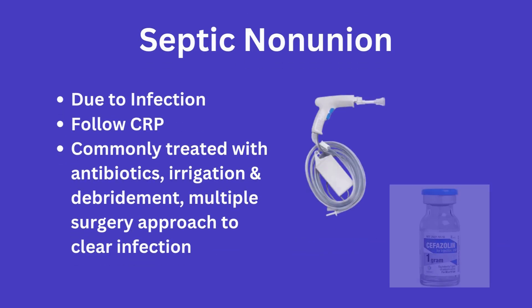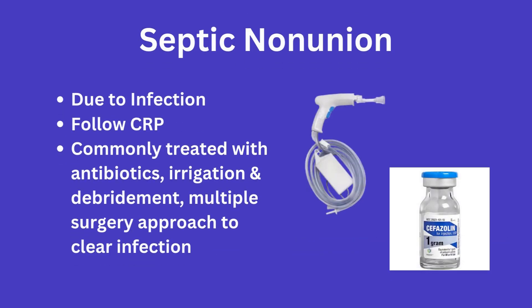Next is a septic non-union. This is exactly what it sounds like and occurs when there is osteomyelitis or surrounding infection that limits proper healing of the fracture. Inflammatory markers like CRP can be used to track the infection, and a staged approach is typically employed in which the surgeon will do serial irrigation and debridements, abbreviated as I&Ds, in order to ensure all infected and necrotic tissue is removed.